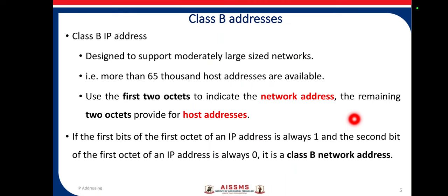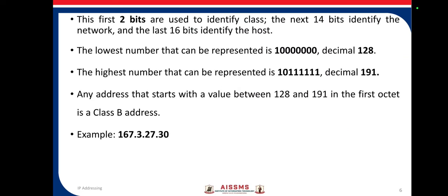Class B addresses support large size networks, where more than 65,000 host addresses are available. In class B, the first two octets indicate the network address and the remaining two octets provide the host address. The first bit of the first octet is always one, and the second bit is always zero.